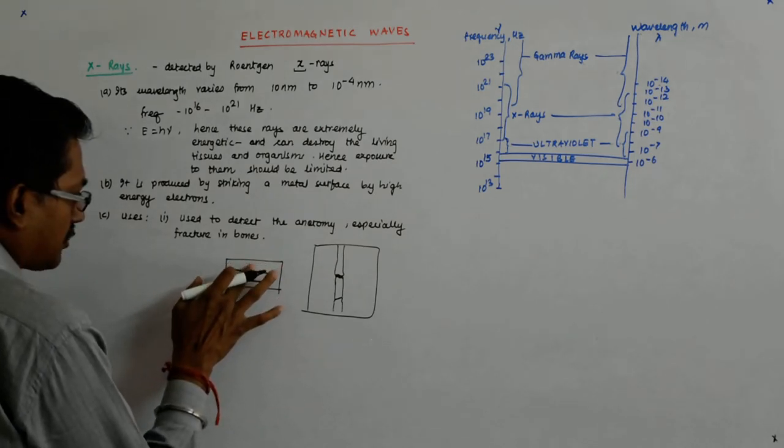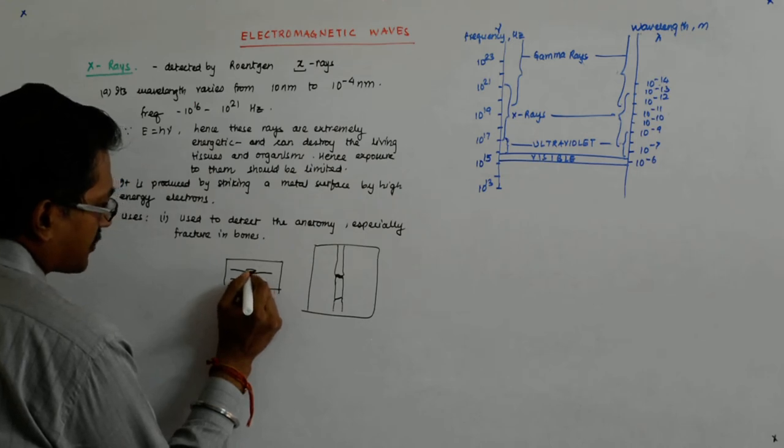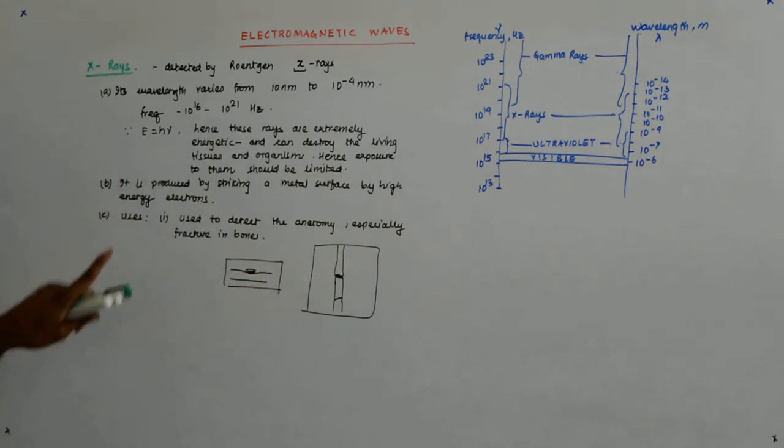So, maybe it will look something like this. This is the chip and this portion is black. So, that shows you that it has come off. That's how the principle of x-rays works.